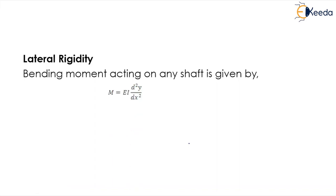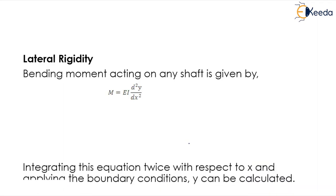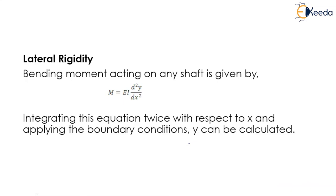Integrating this equation twice with respect to x and applying the boundary conditions, y can be calculated. This y is termed as deflection. When you integrate once, this becomes M equals EI dy/dx, which is the value for slope.